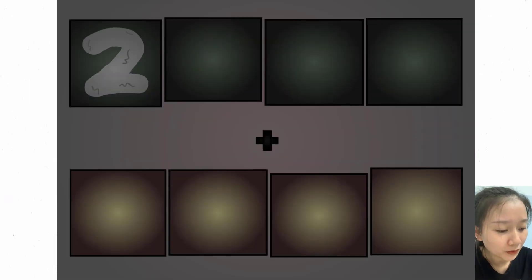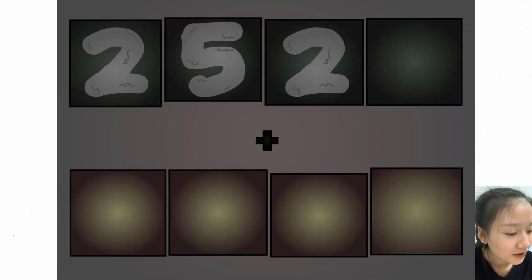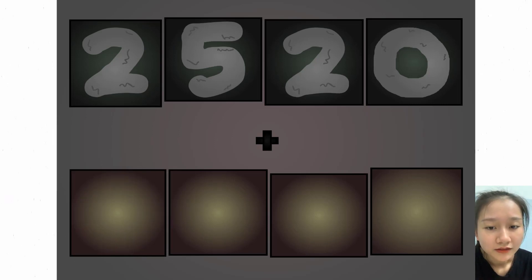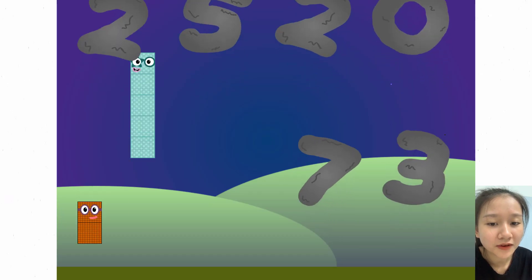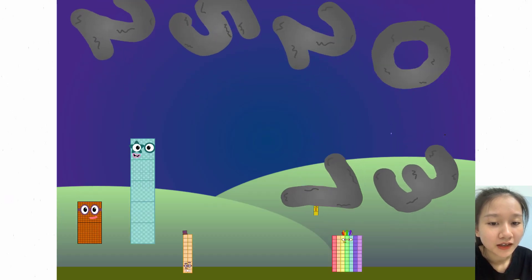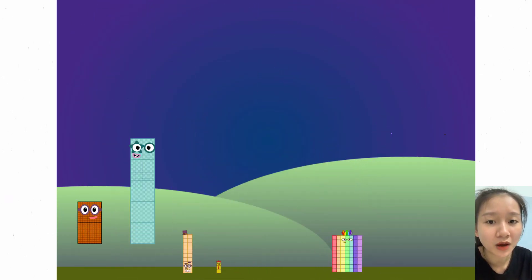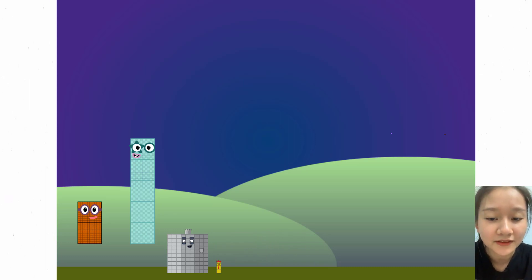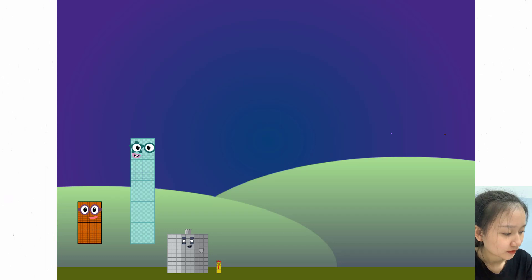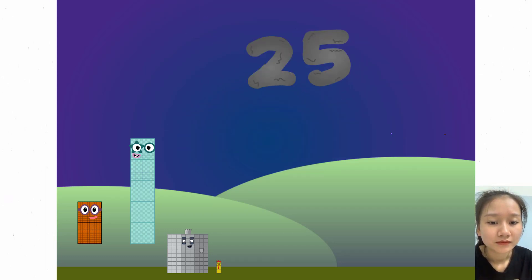Two thousand five hundred twenty, plus seventy-three, equals 2,590.